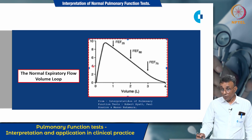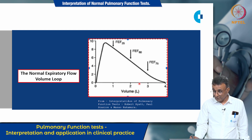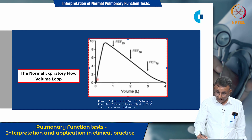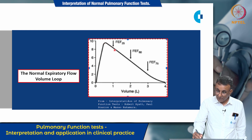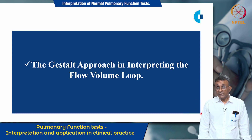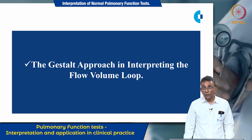This is a normal expiratory flow volume loop showing volume on the x-axis and airflow rate on the y-axis, from which you can derive the forced vital capacity, peak expiratory flow rate, and FEF 25, 50, and 75. The gestalt approach in interpreting the flow volume loop is widely followed by many clinicians, and we shall have an overview of it over the next few slides.